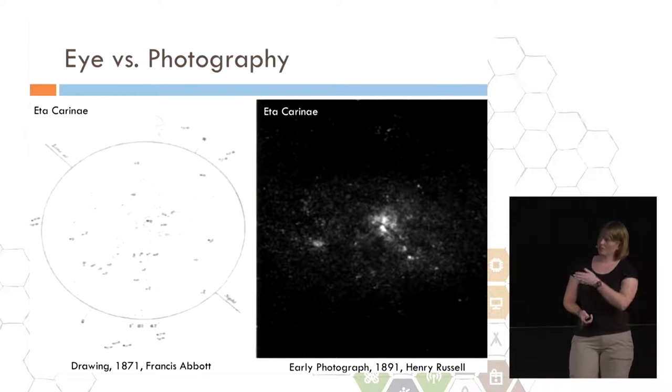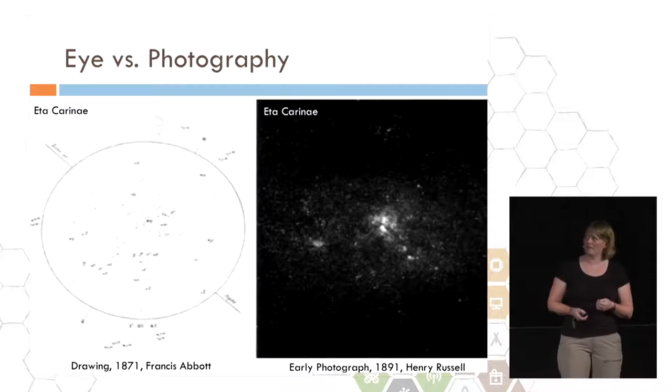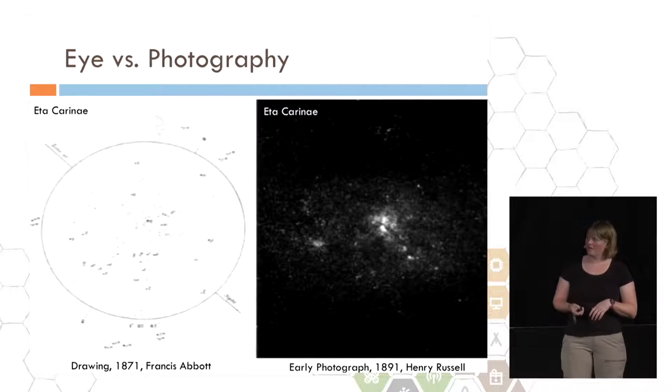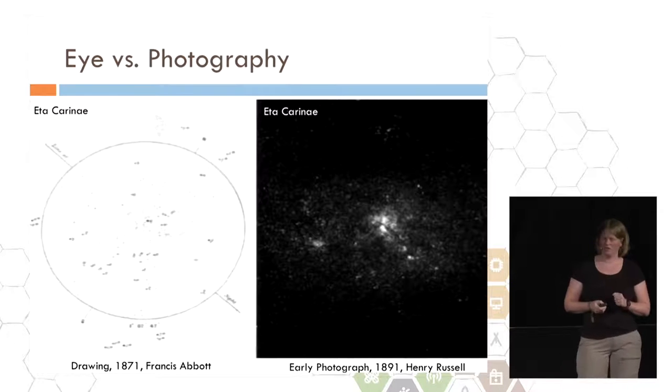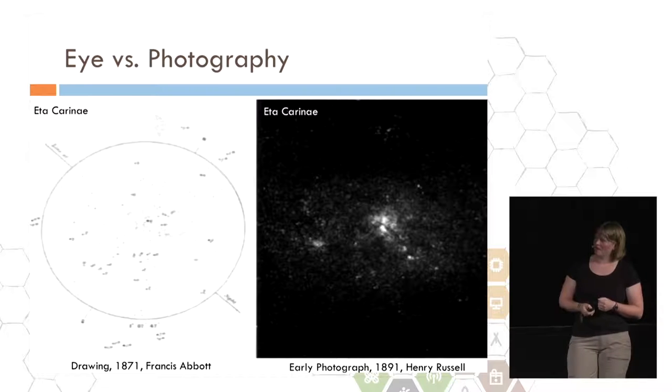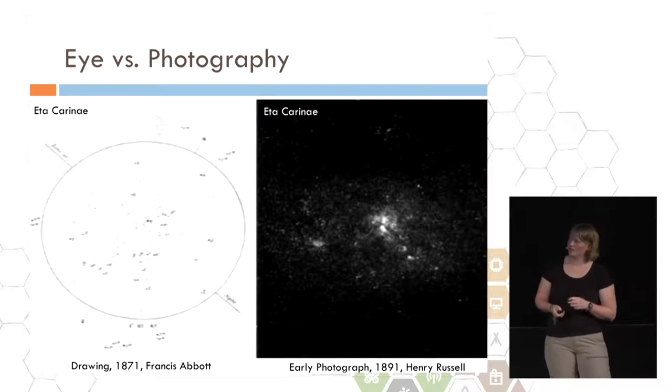This is just an example here of what the human eye can do versus what early photographs could do. On the right, we have Eta Carinae, which is a supernova remnant. You can see that there's kind of some gaseous things drawn, a couple of dots, but it's kind of hard to see the structure. In the first photograph, you could actually see that there was gaseous structures, and that there were many more stars than originally thought. That photograph is from 1891.